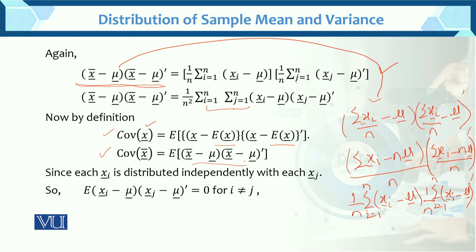Since each xᵢ is distributed independently of each xⱼ, the expected value of the i-th and j-th unit cross-term is zero. That is, if xᵢ and xⱼ are independent, their covariance equals zero. So the expected value of (xᵢ minus μ)(xⱼ minus μ) transpose equals 0, for i not equal to j. If i equals j, we have the variance form; if i is not equal to j, we have the covariance form which equals zero.